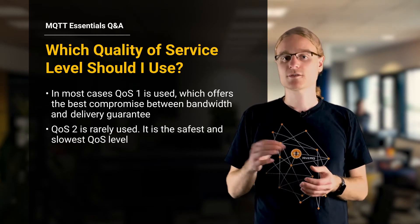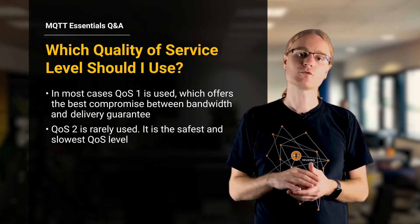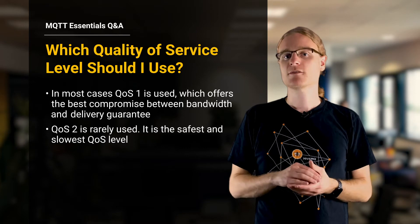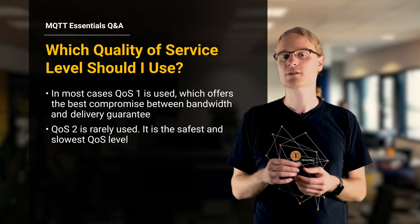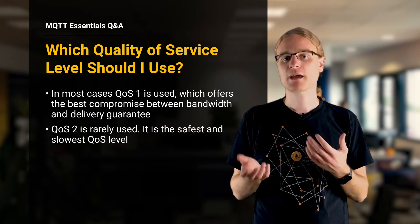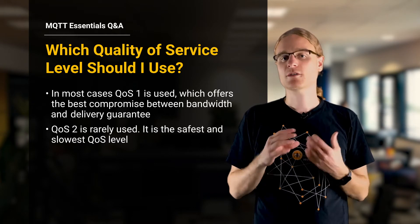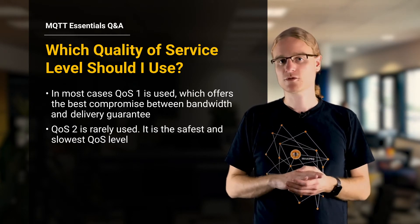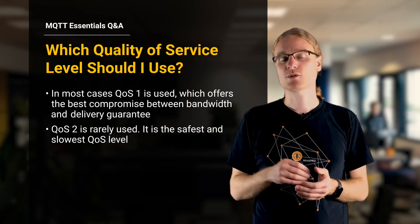Exactly once, so quality of service level two, is something you very rarely use. Because exactly once delivery is very expensive in terms of bandwidth. It's usually very slow because there is a lot of ping pong required. And in general, it's also very hard on the client side to hold the state under all circumstances. So most people use at least once delivery.